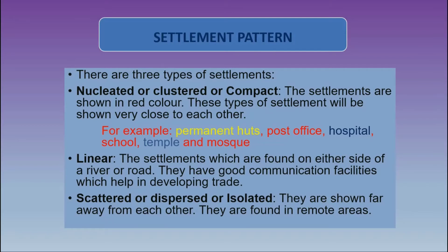The second type of settlement is linear. These are settlements found on either side of a river or road. They have good communication facilities which help in developing trade. The linear type of settlements are shown on either side of a river or road and are well connected with metal roads, which help in developing trade.